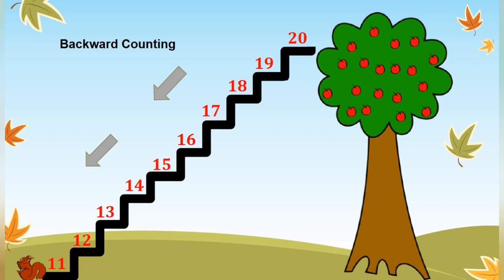So, children, here, as I explained you earlier, 19 is 1 less than 20, 18 is 1 less than 19, 17 is 1 less than 18 and so on. So, when we do backward counting, number is smaller in value.